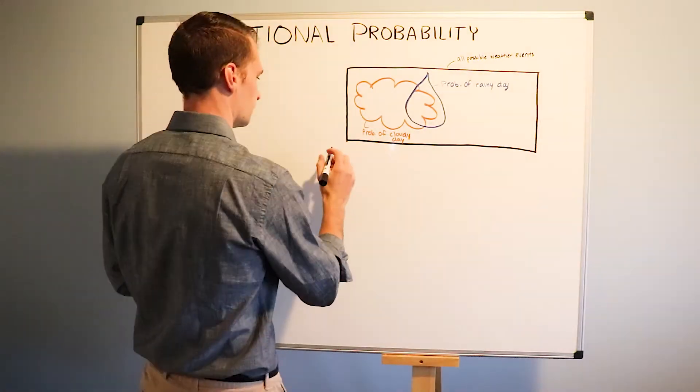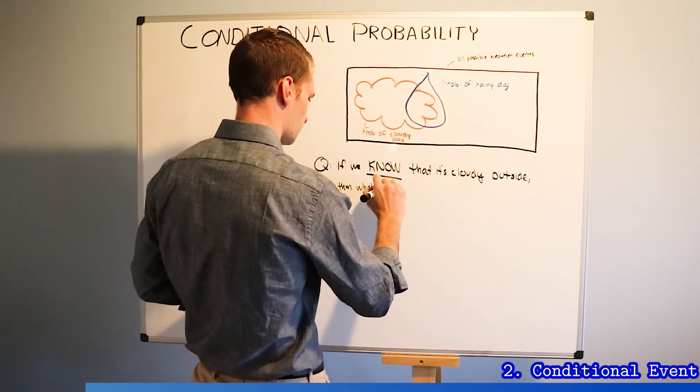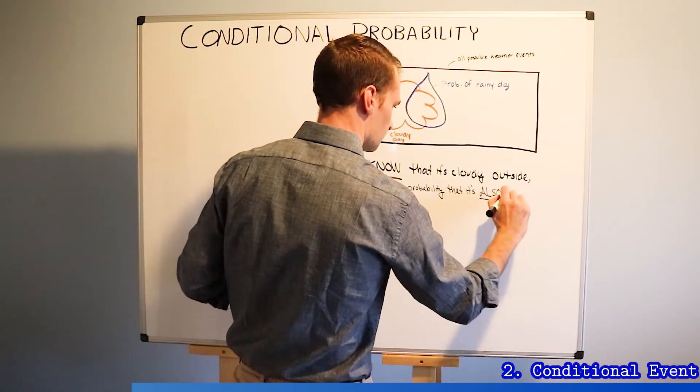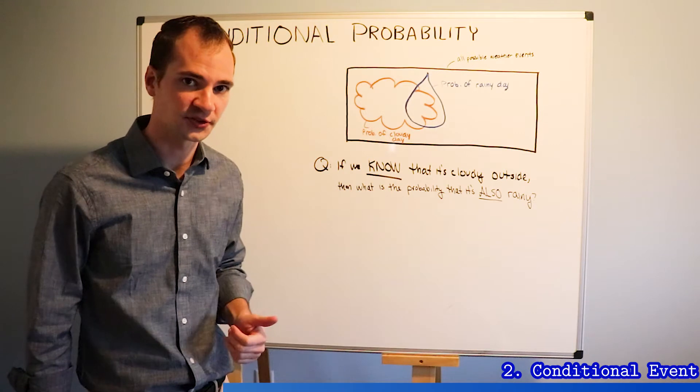So let me ask you a question. If we know that it's cloudy outside, what is the probability that it's also rainy? This first clause is what makes this a conditional event.